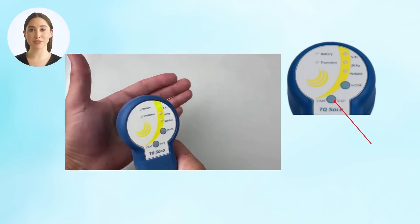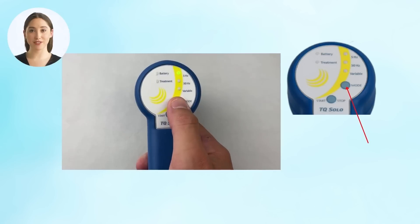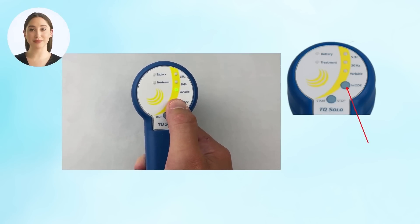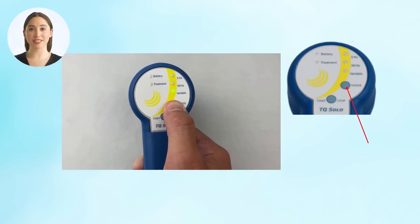Once on, the laser will default to 5 Hz as the frequency. To change the frequency, click the mode button until you select your desired frequency. Once you have selected the appropriate frequency, click the start button to begin emitting light.